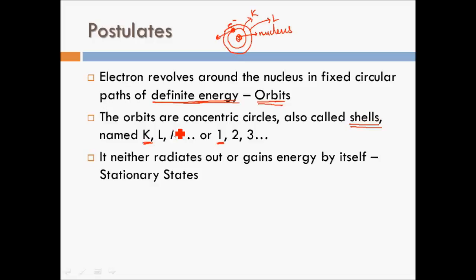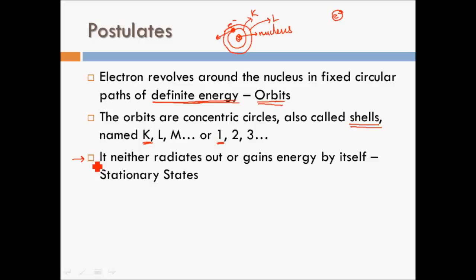The next postulate is that the electron, as long as it is revolving in its circular orbit, cannot radiate or gain energy by itself. If the atom is isolated, the energy of the electron remains fixed — it neither gains nor loses energy. This postulate helped explain the stability of the atom, which Rutherford could not explain.